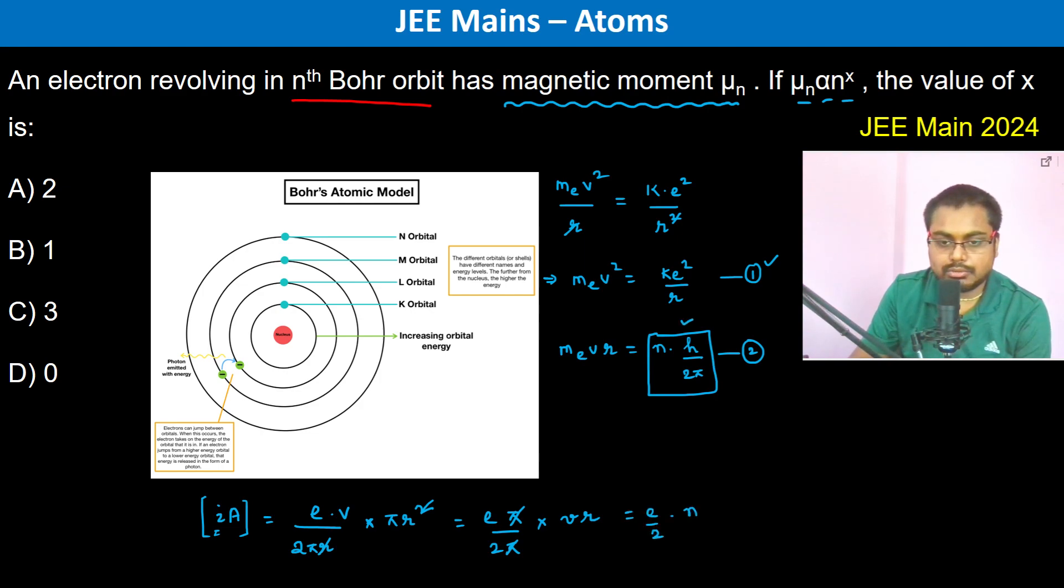Therefore we can see it's n to the power 1. So therefore the value of x is 1 because it is proportional to n to the power 1.